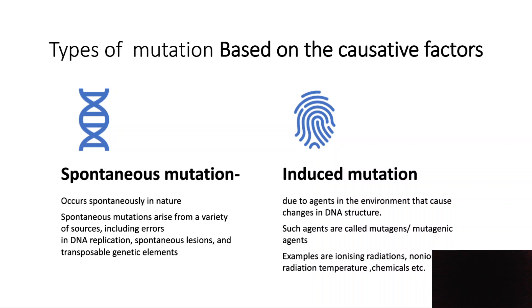One cause of spontaneous mutation is errors during DNA replication. During DNA replication, a parent strand serves as a template and a daughter DNA strand is synthesized. What is DNA replication? It is the process by which DNA is copied.